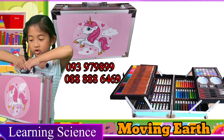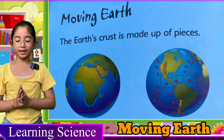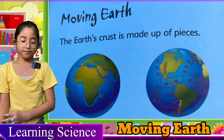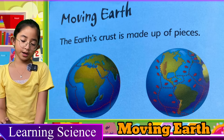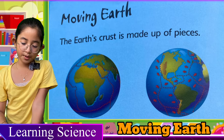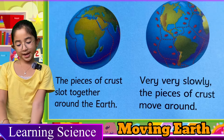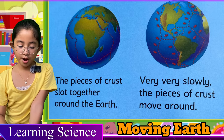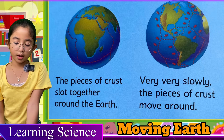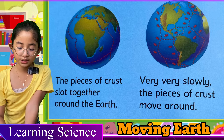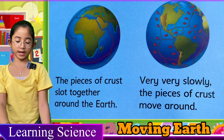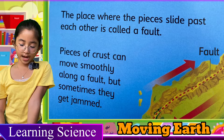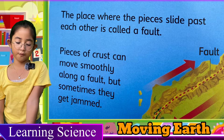Moving earth — the earth's crust is made up of pieces. The pieces of crust slot together around the earth very, very slowly. The pieces of crust move around. The place where the pieces slide past each other is called a fault.